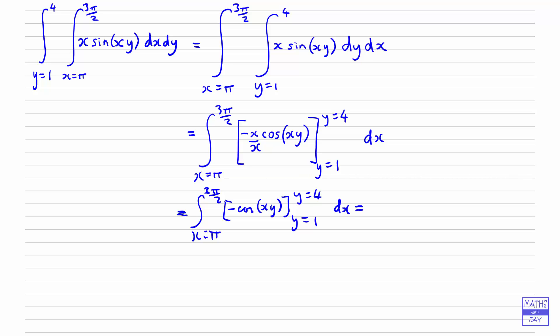So now we can substitute in those limits, so this bit's still remaining as it was, and then we're going to substitute in y equals 4, so that will give us minus cos(4x), and then substitute in y is 1, so that will give us minus minus, so that will be plus cos(x).